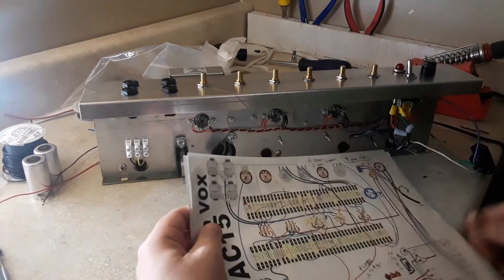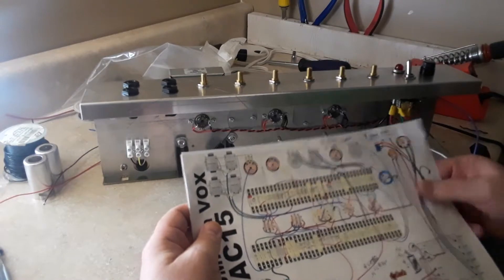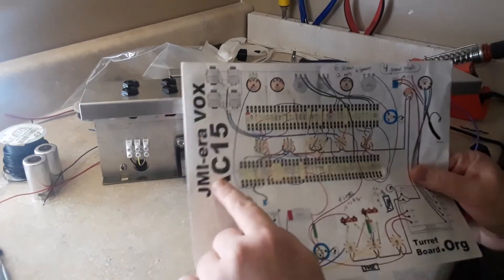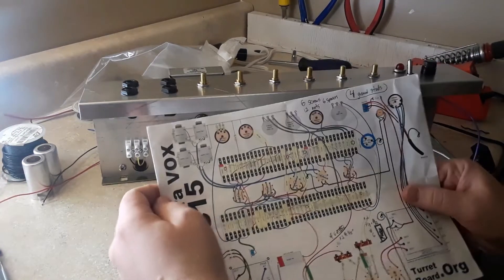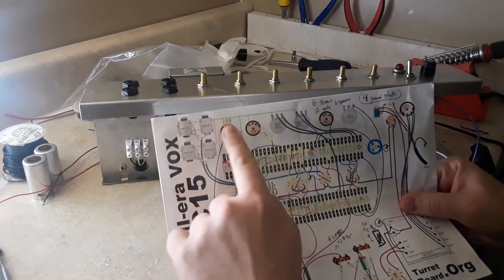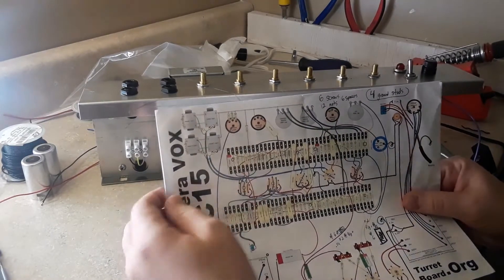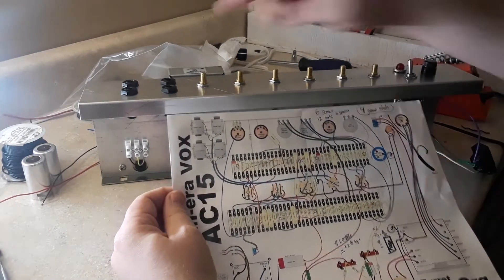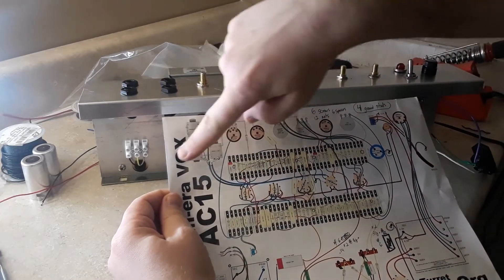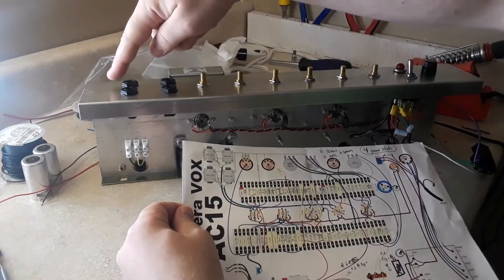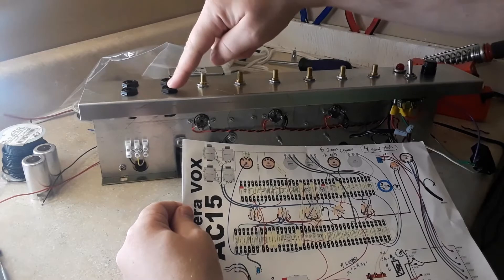I had to pause a little bit today in my build and think about how I wanted to do the input wiring. If you look at this AC15 layout, the way that the input jacks were grouped on the AC15 was we had one channel on the top, another channel on the bottom. So one channel would be here and one channel would be here.